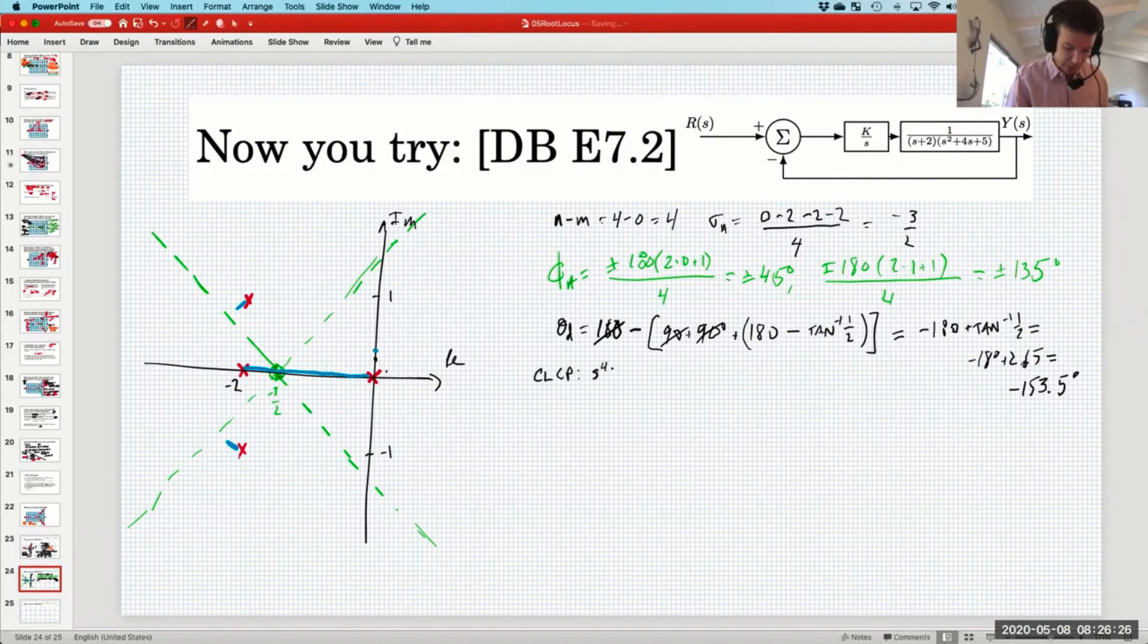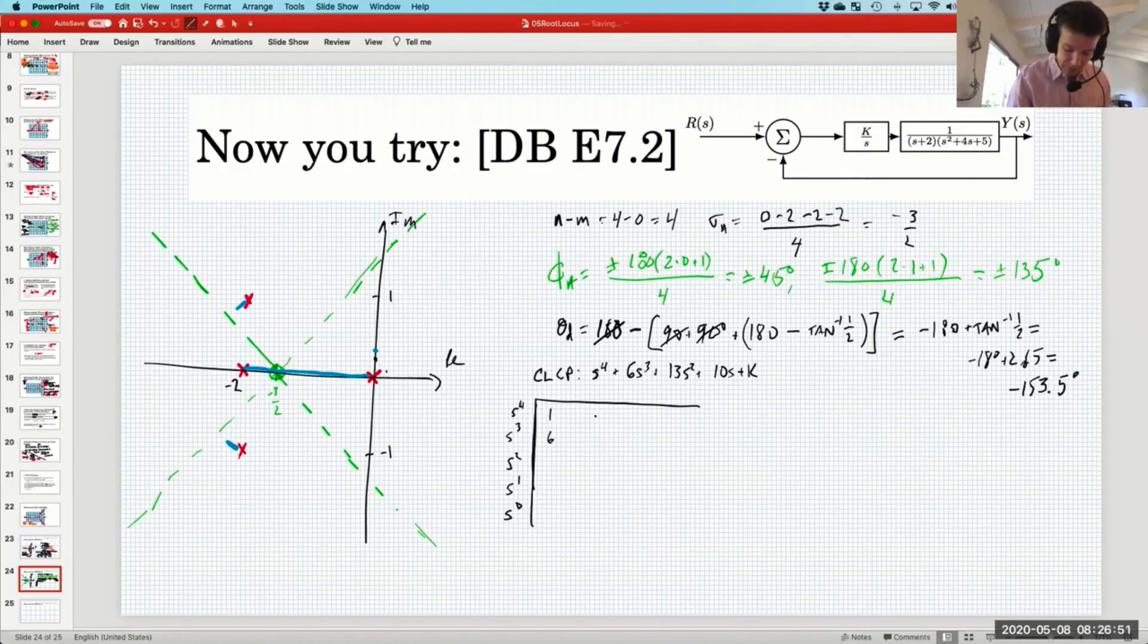So CLCP. And that is, if you work it out, it's S to the four plus six S to the three plus 13 S squared plus 10 S plus K. And so your Routh Array goes S to the four, S to the three, S to the two, S to the one, S to the zero. And this is my favorite part: 1, 6, 13, 10, K, and zero.